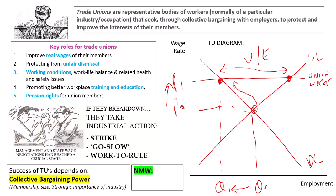Have a think about what a national minimum wage is — can you define it? The national minimum wage is a statutory, so a legal, pay floor that employers must pay their workers. It's also a good idea to learn the actual minimum wage rate for over-25s so you can use that as application in your essays. The trade union diagram is also a national minimum wage diagram — everything applies; the only thing you change is the union wage to a national minimum wage.